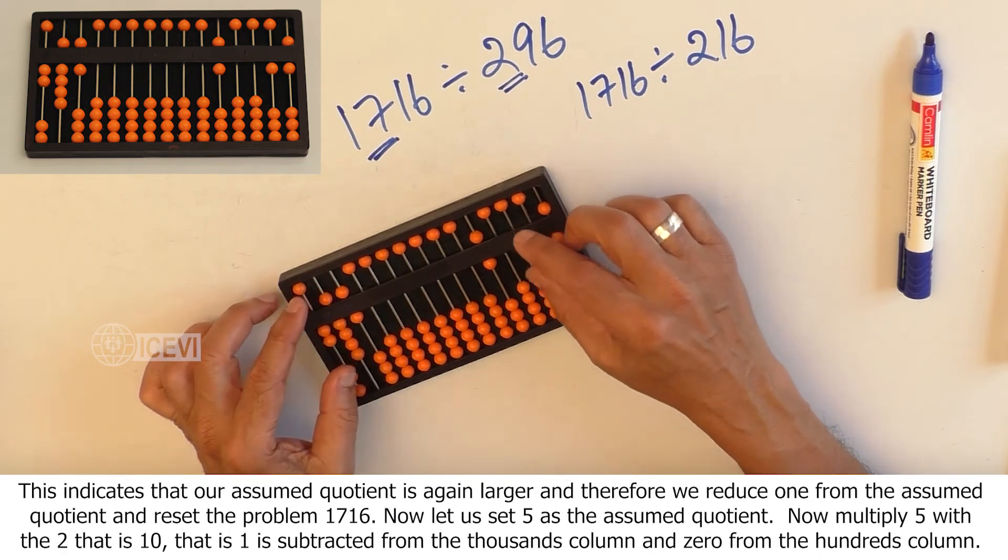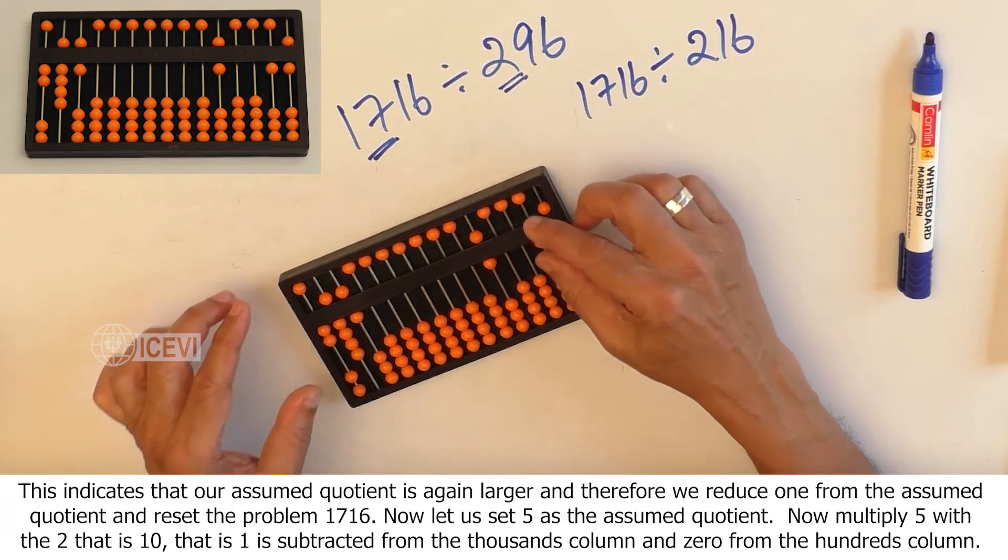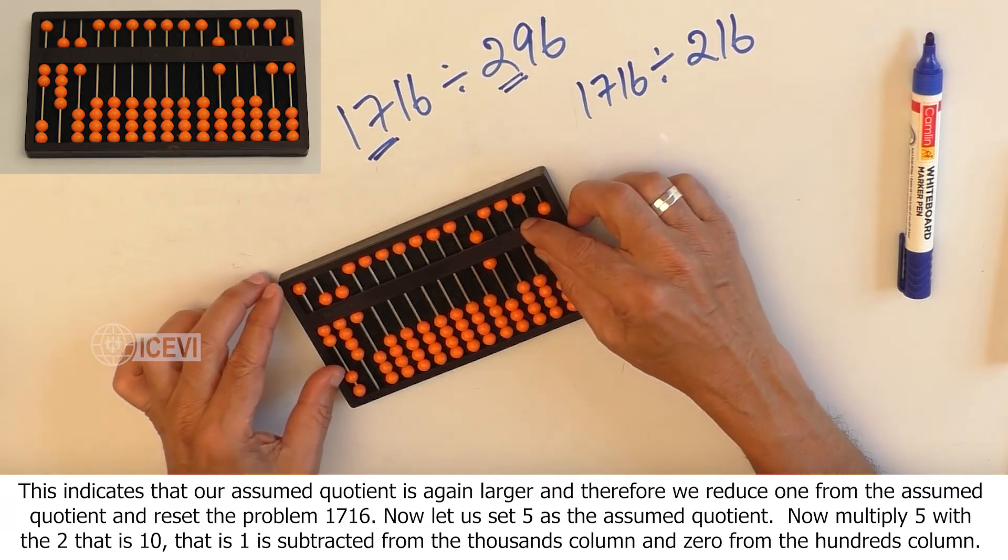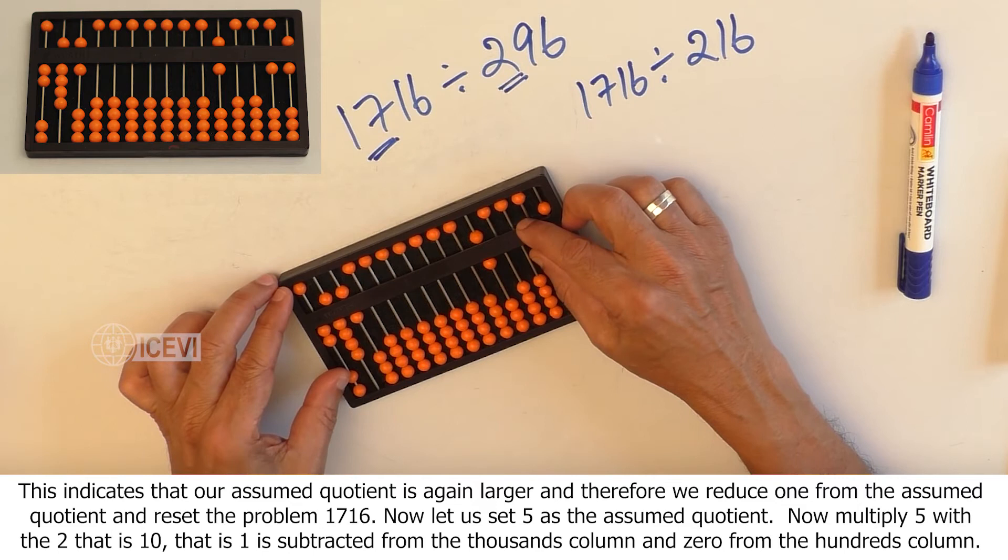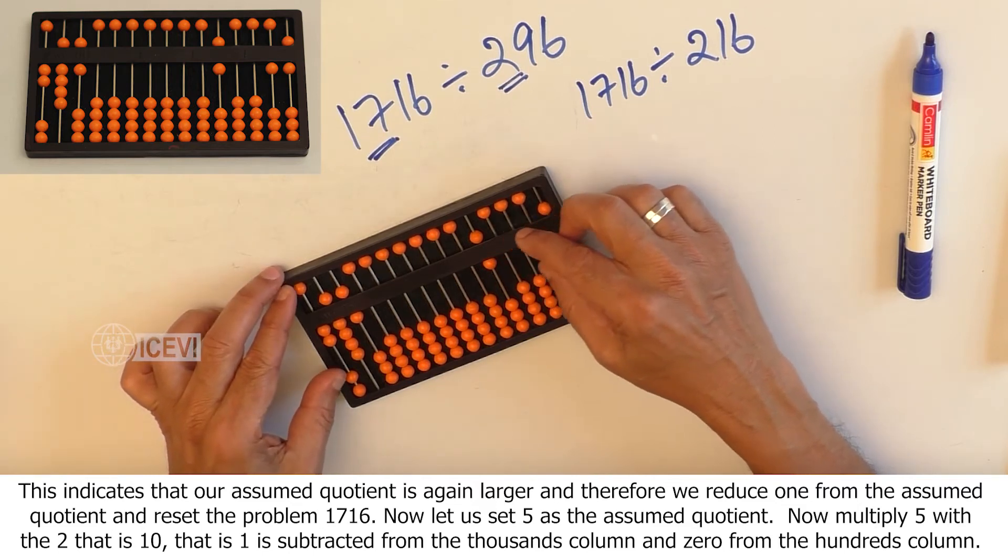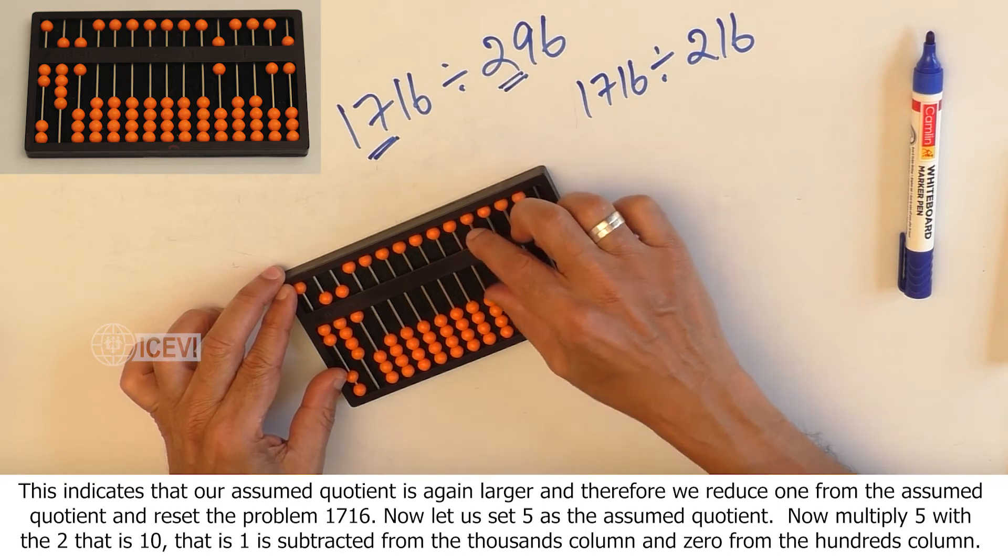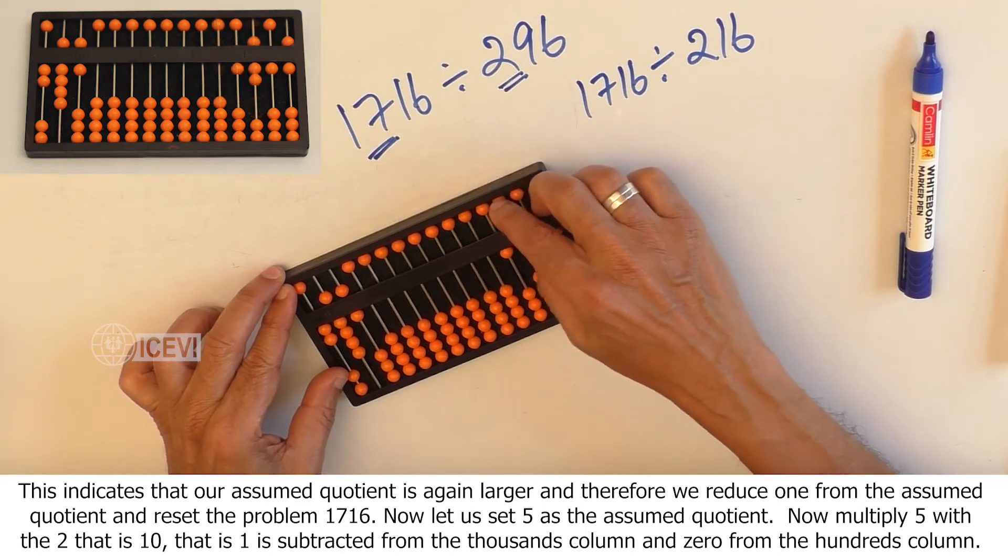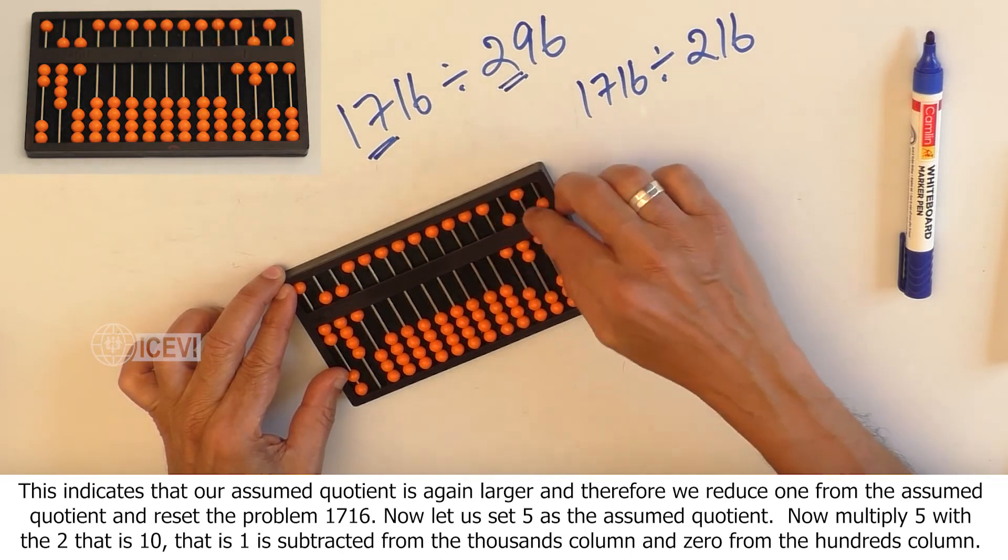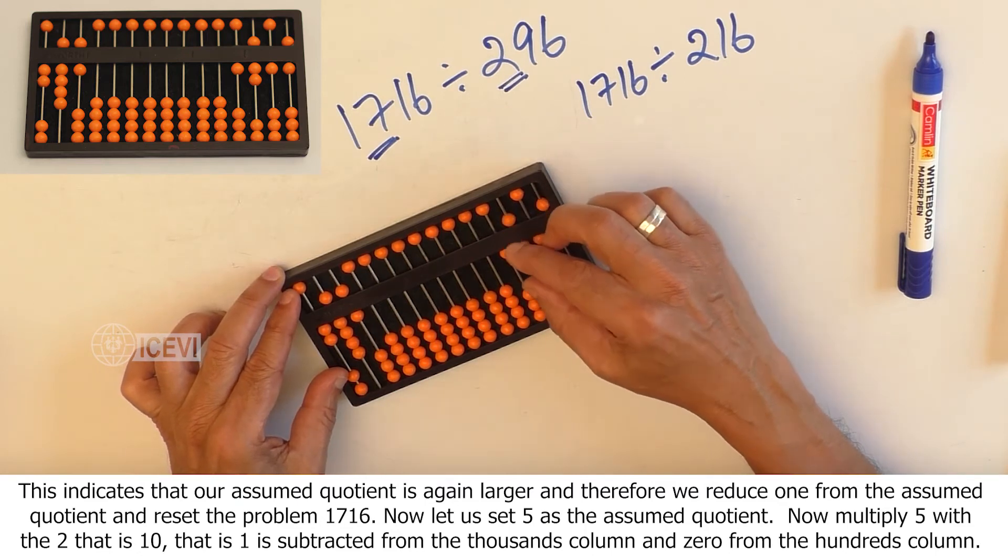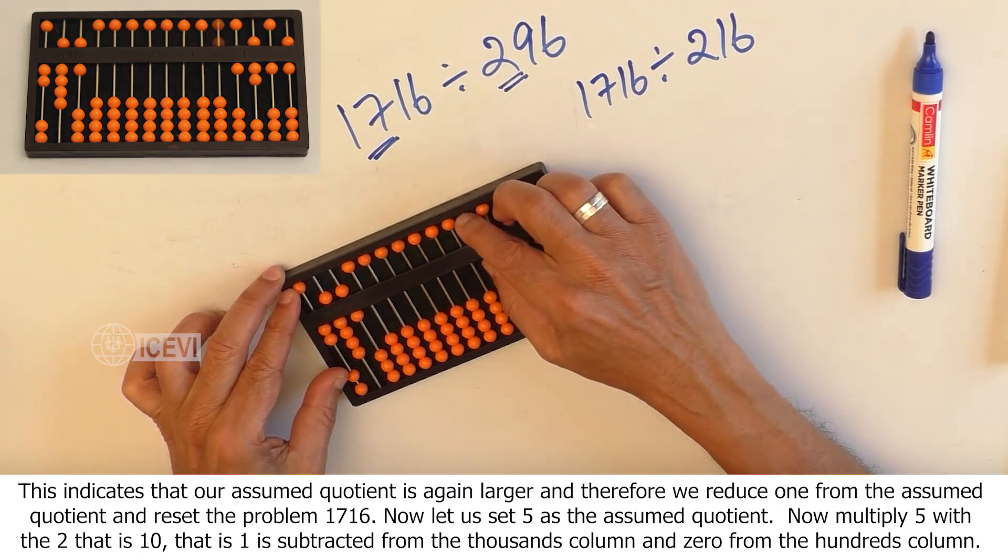This indicates that our assumed quotient is again larger and therefore we have to reduce 1 from the assumed quotient and reset the problem 1716. Now, let us set 5 as the assumed quotient.